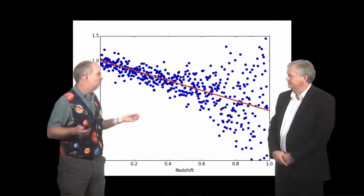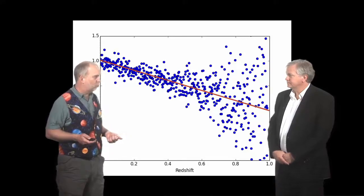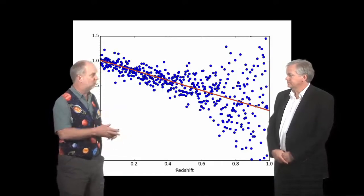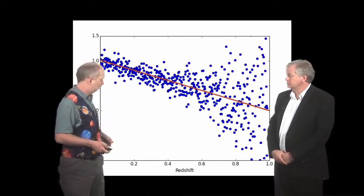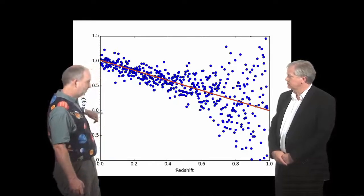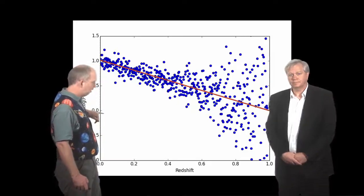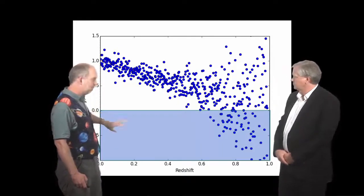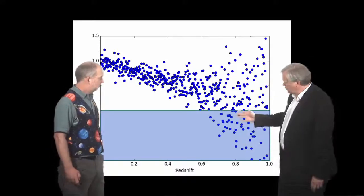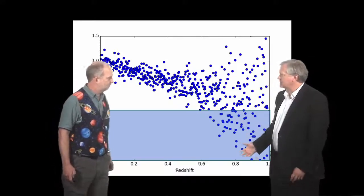So you'd need to be three or five times the noise level before you're really confident things are real. Otherwise, you're just going to get swamped by just random statistical fluctuations. So let's say this is our cutoff here. We've decided that that's the faintest we can go and believe it. So we're not going to believe anything below there. And that means you're going to lose all of these objects that are too faint.